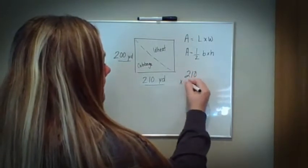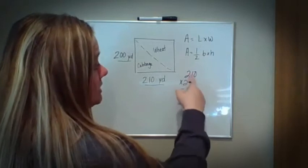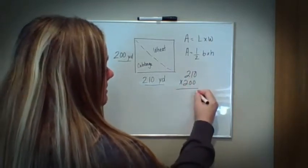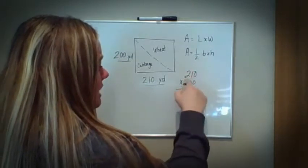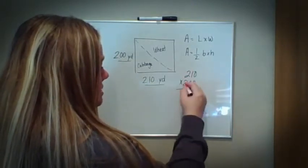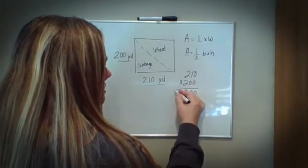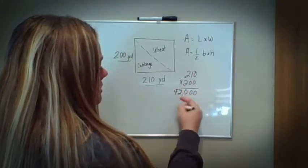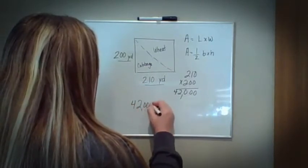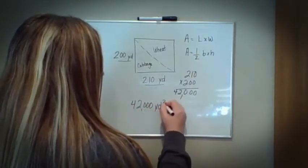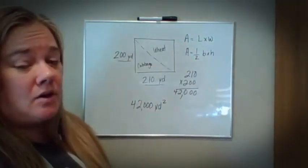210 times 200. It's really 210 times 2, so I'm going to have two placeholders for my zeros. And now I'm simply looking at it as 210 times 2, which is 0, 2, and 4. So 42,000 yards squared is my total area of my garden.